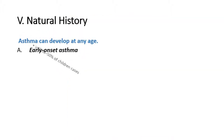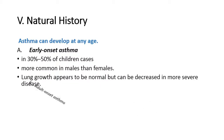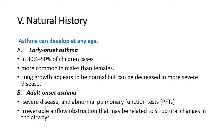Natural History: Asthma can develop at any age. A. Early onset asthma occurs in 30–50% of children cases, more common in males than females. Lung growth appears to be normal but can be decreased in more severe disease.